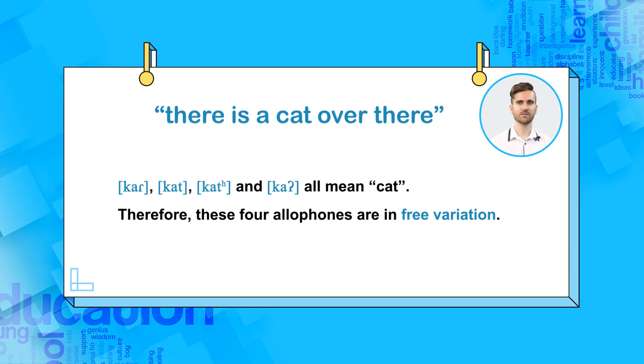Therefore, these four allophones are not in complementary distribution, because they can all be in the same place, namely, inside cat. Therefore, the phonetic environment is the same, so it does not determine which allophone can be used.